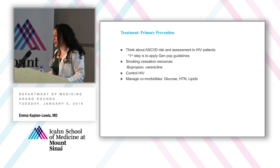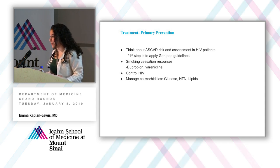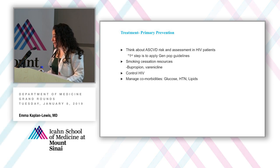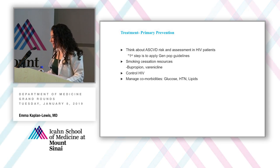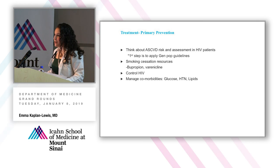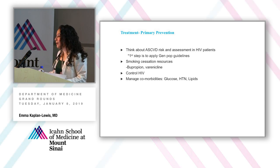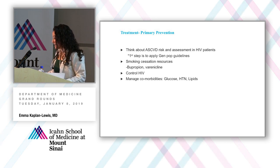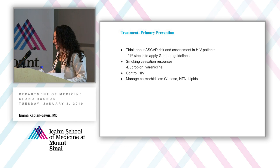For primary prevention: people with HIV at the very least have the same cardiac risk as the general population, so applying general population guidelines is a good first step. There's an open question of whether we should be more aggressive, but data don't clearly support that yet. Smoking cessation is critical — there are disparities in assessment; people with HIV are less likely to be assessed for readiness to quit using the five A's framework. Controlling HIV and managing comorbidities aggressively is essential.